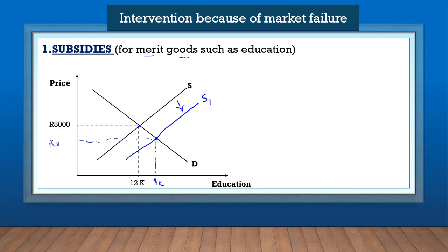We've got a lower equilibrium price at four thousand, for example. So what the subsidy does is it lowers the price and increases the quantity. This is what the government wants — the government wants people to consume more of the merit goods. By introducing the subsidy, the supply curve shifts from S to S1, which lowers the price of education so more people can consume it.